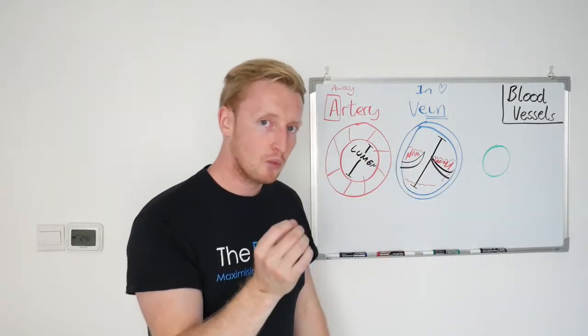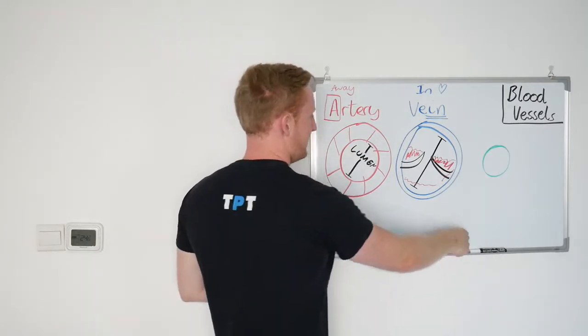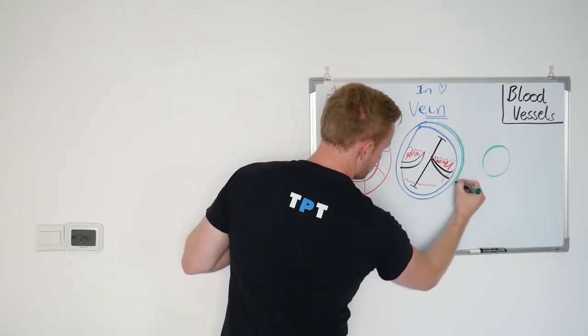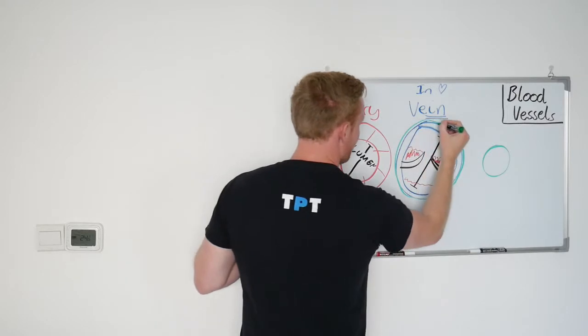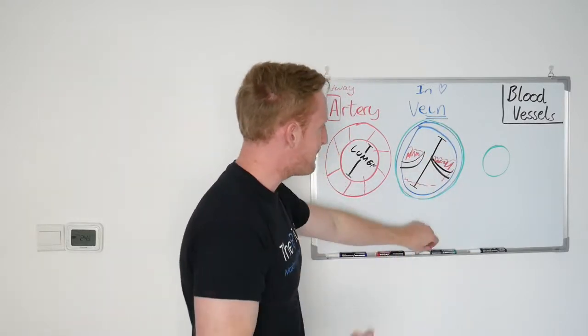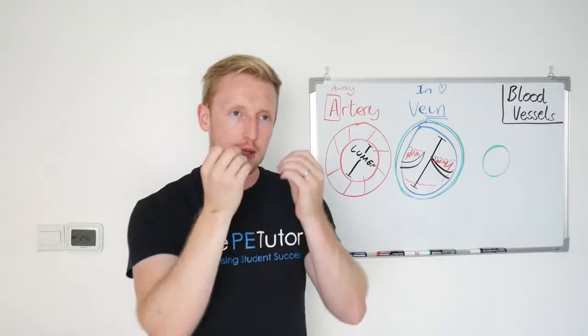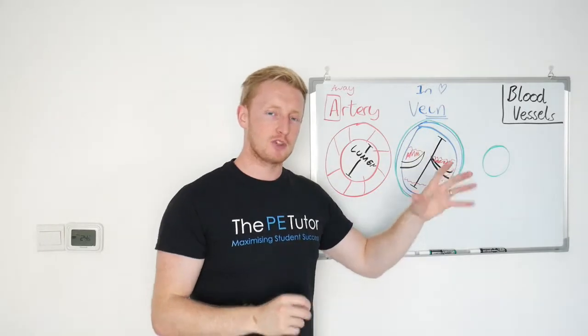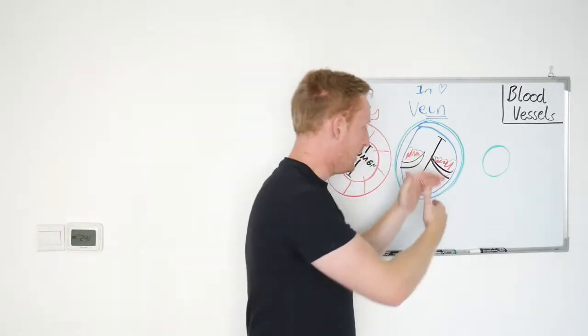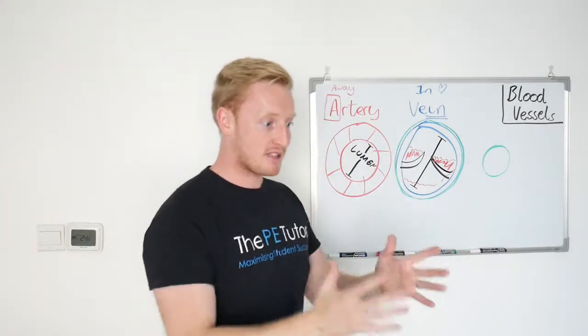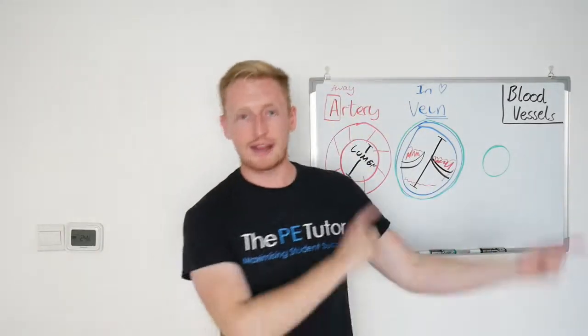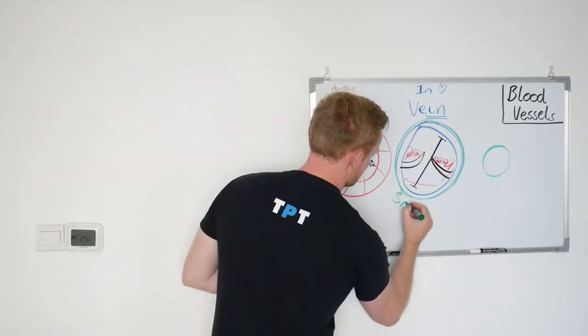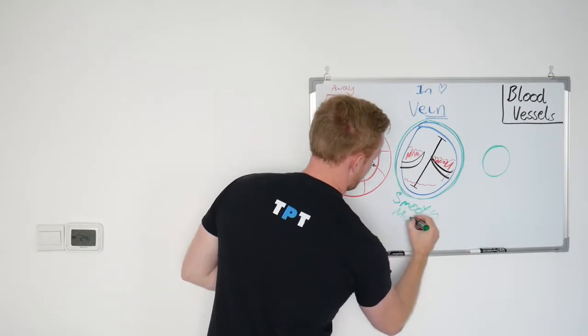The one thing which they do have which is a little bit different to an artery is something called smooth muscle. Let me put this in green here. It's a layer of very thin muscle, smooth muscle it's called, and it works by twitching or contracting ever so lightly or ever so slightly when we start to exercise. So our brain can signal to our cardiovascular system that we need blood to get back to the heart nice and quickly, so then it can get oxygen and get delivered around the body again. So that smooth muscle.